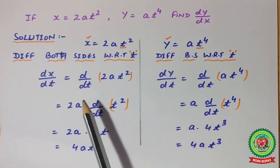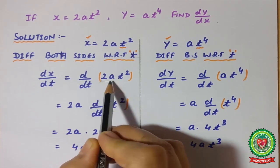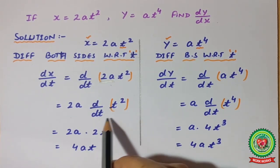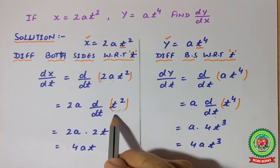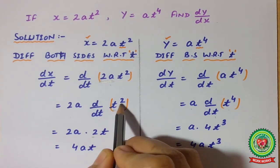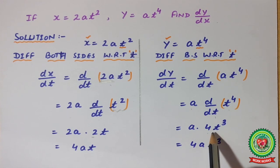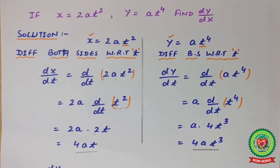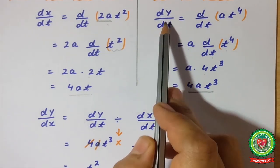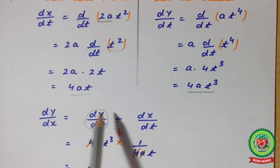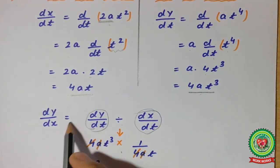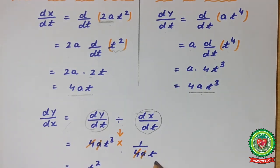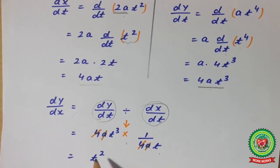We also find dy/dt. Since 2a is a constant, it comes forward and we differentiate t² with respect to t, giving dx/dt = 2a × 2t = 4at. Similarly, dy/dt = a × 4t³ = 4at³. Now dy/dx = (dy/dt) / (dx/dt) = 4at³ × (1/4at). After cancellation, the answer is t².